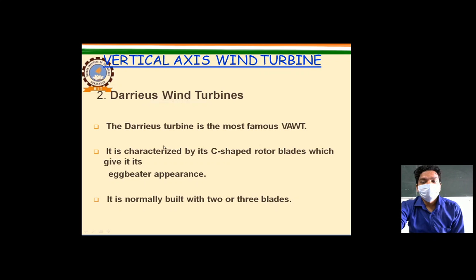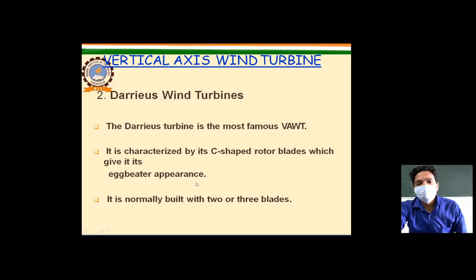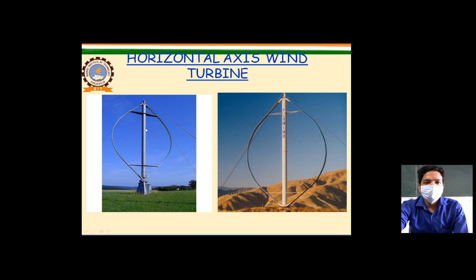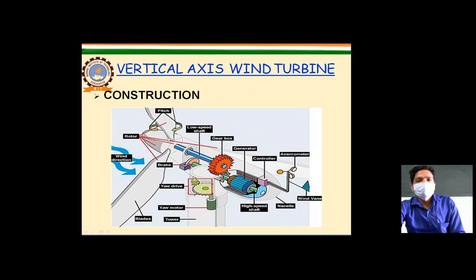One type of vertical axis wind turbine is the Darrieus wind turbine, which is most famous. It is characterized by its C-shaped rotor blades, which give it a distinctive appearance. It is normally built with 2 or 3 blades.